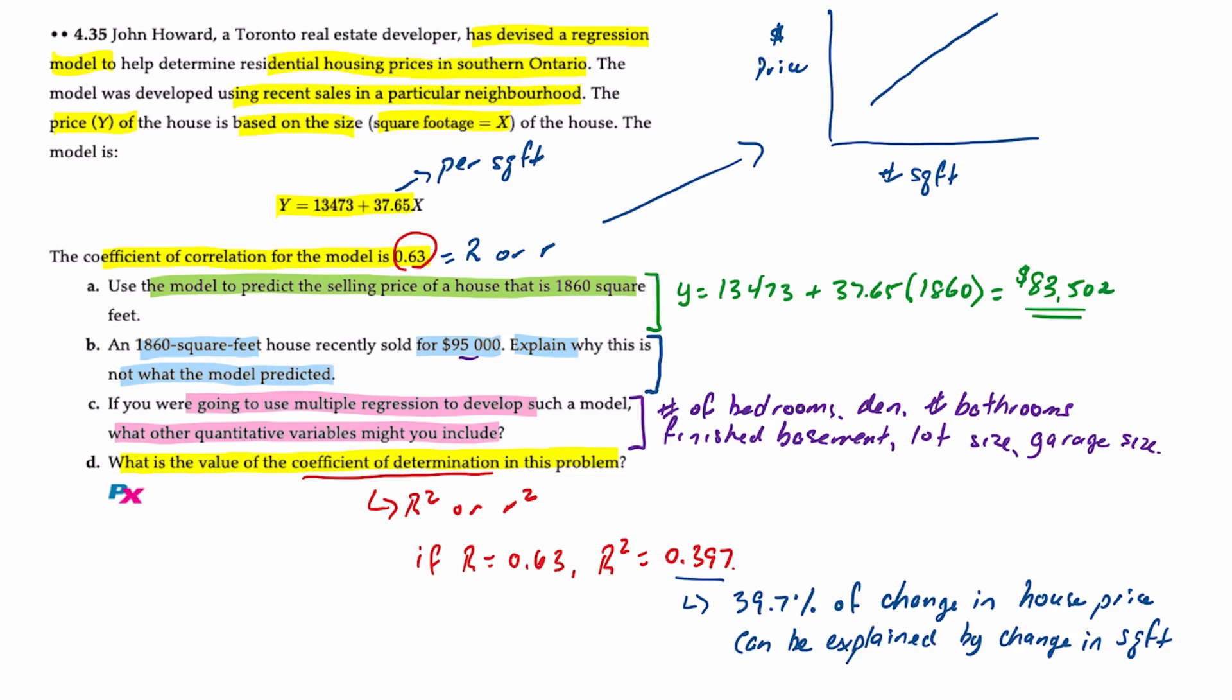Now that may not seem like a lot, 39.7%, but if you think about it, that one particular variable in this case, square footage of a house, can explain close to 40% of the house price is actually fairly significant.